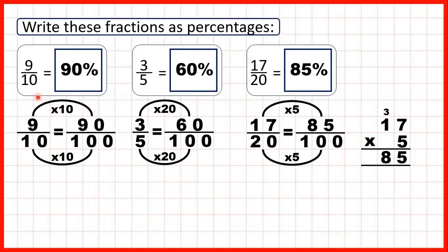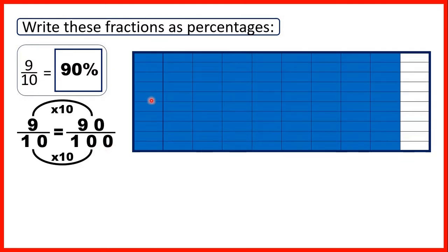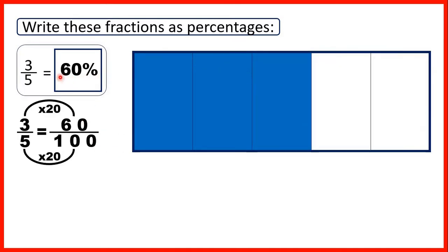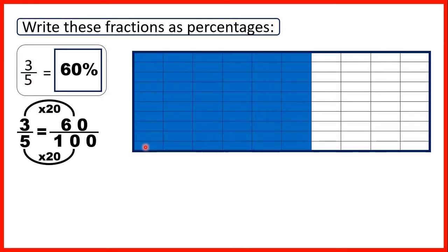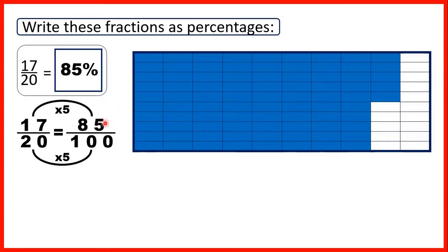Looking at what we did: first we had 9 tenths — 9 parts out of 10 on our fraction bar. A percentage is a fraction over a hundred and we found that 9 tenths was equivalent to 90 hundredths, so that's 90 percent. Then we had 3 fifths; we found that was equivalent to 60 hundredths, so 60 percent. And finally we had 17 twentieths — 17 parts out of 20. We found that was equivalent to 85 hundredths, so as a percentage 17 twentieths is 85 percent.